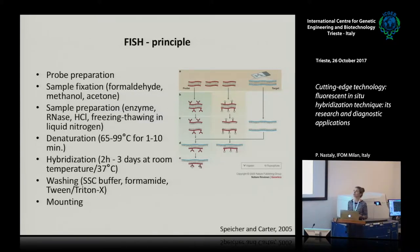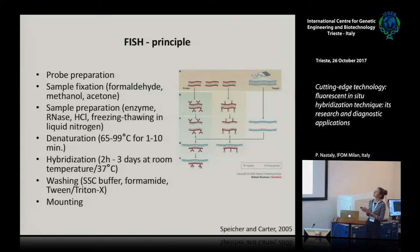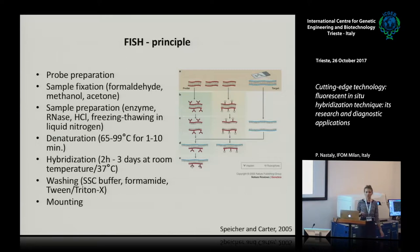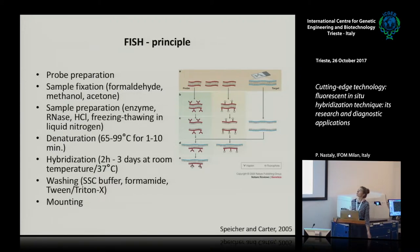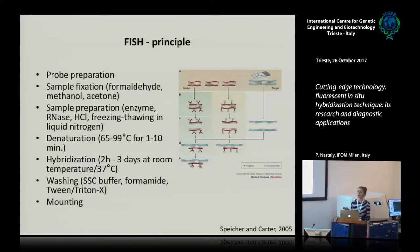The basic elements of in situ hybridization are the probe and the target. First we need to prepare the probe by labeling it with, for example, a fluorophore, and have a target sequence. Then we need to denature both the probe and the target sequence and let them hybridize for usually several hours, wash out the excess probe, and then we can proceed with the imaging.